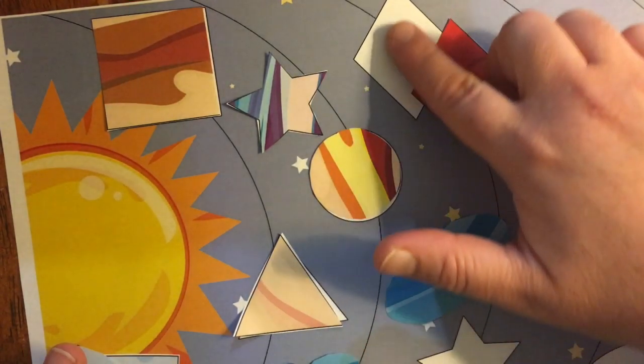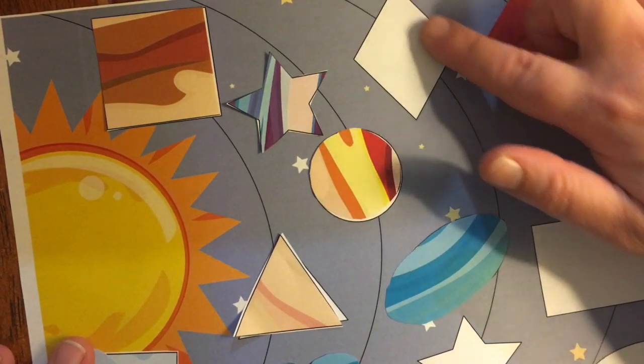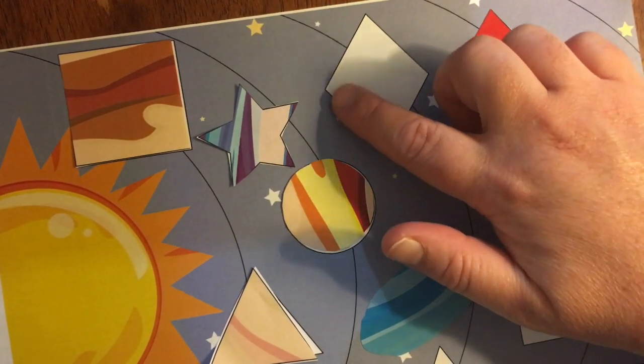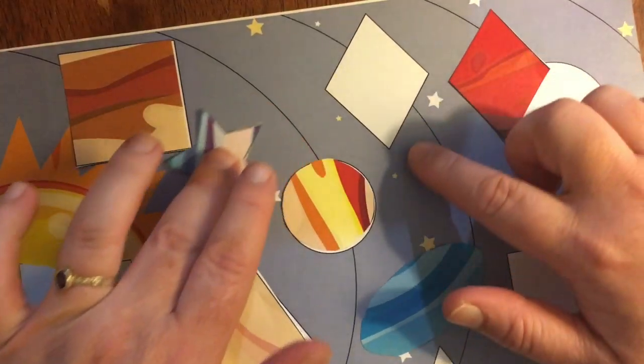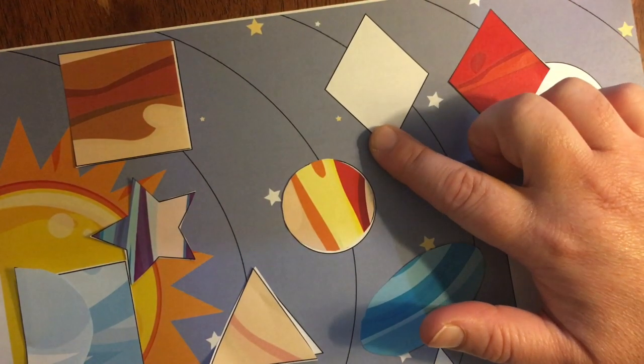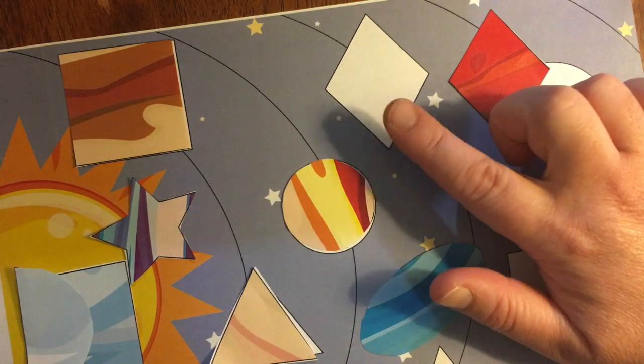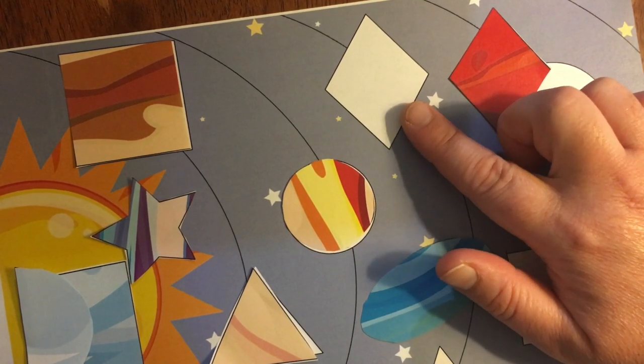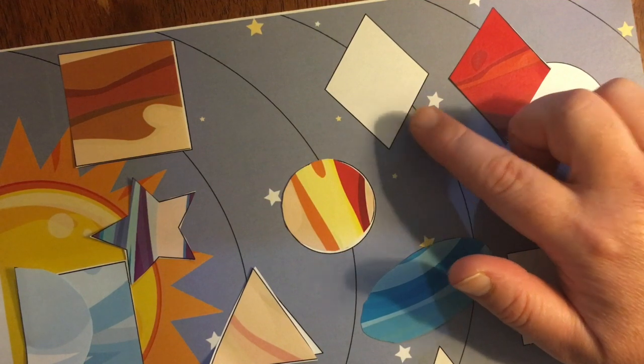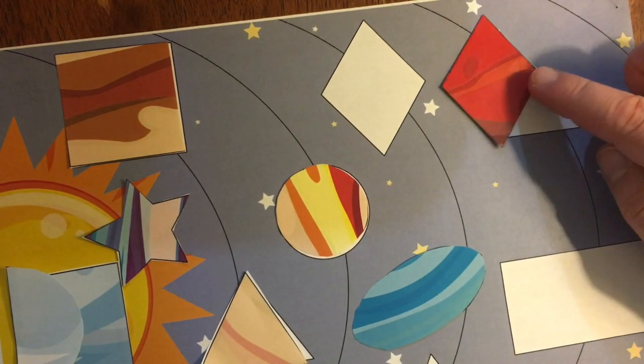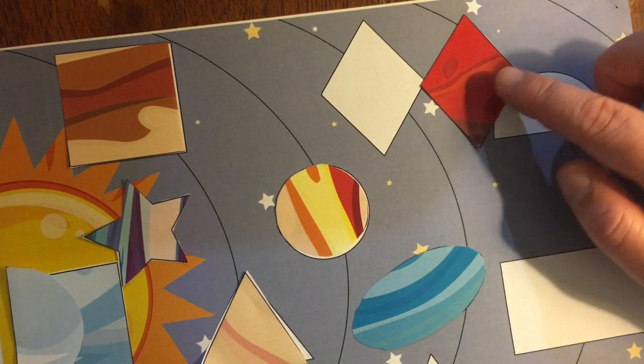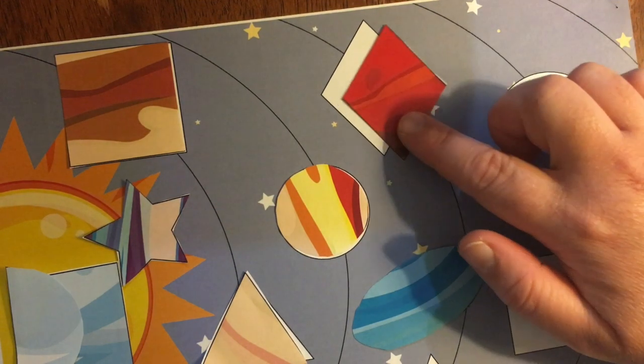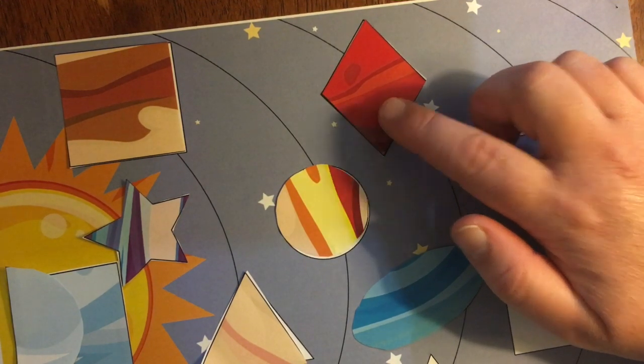This one has one, two, three, four sides too. And they're all about the same size. But that's not a square. What is that? Did you say a diamond? That's right. Another name for a diamond is a rhombus. Can you say rhombus? This is my rhombus right here. I found it.